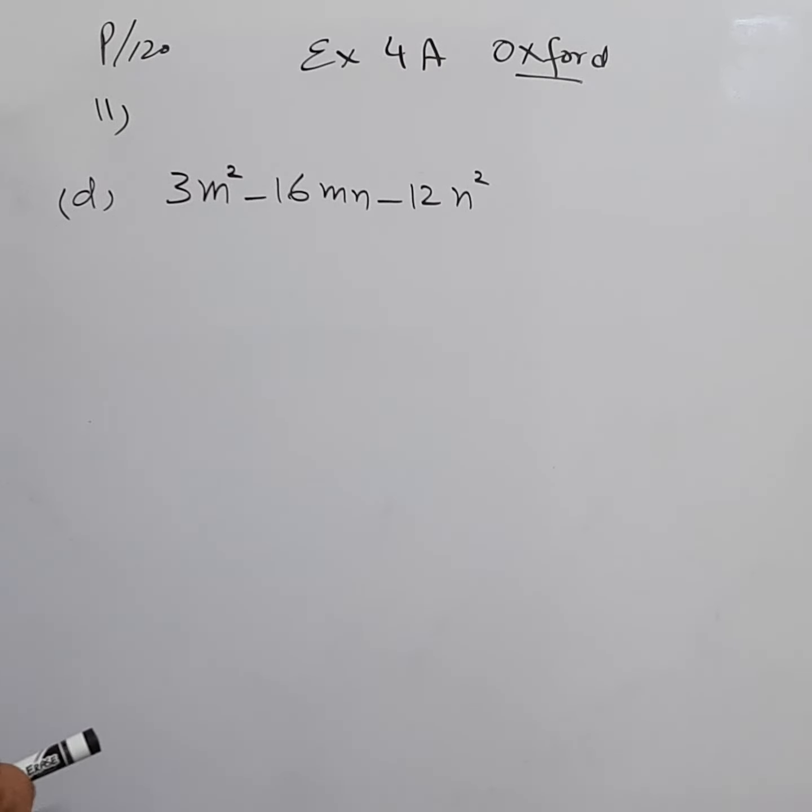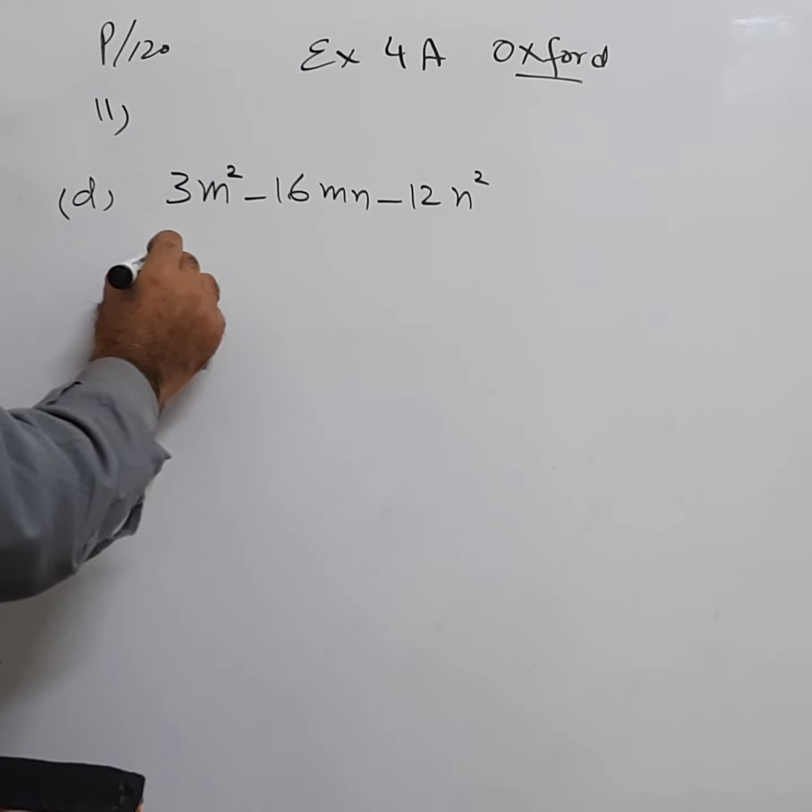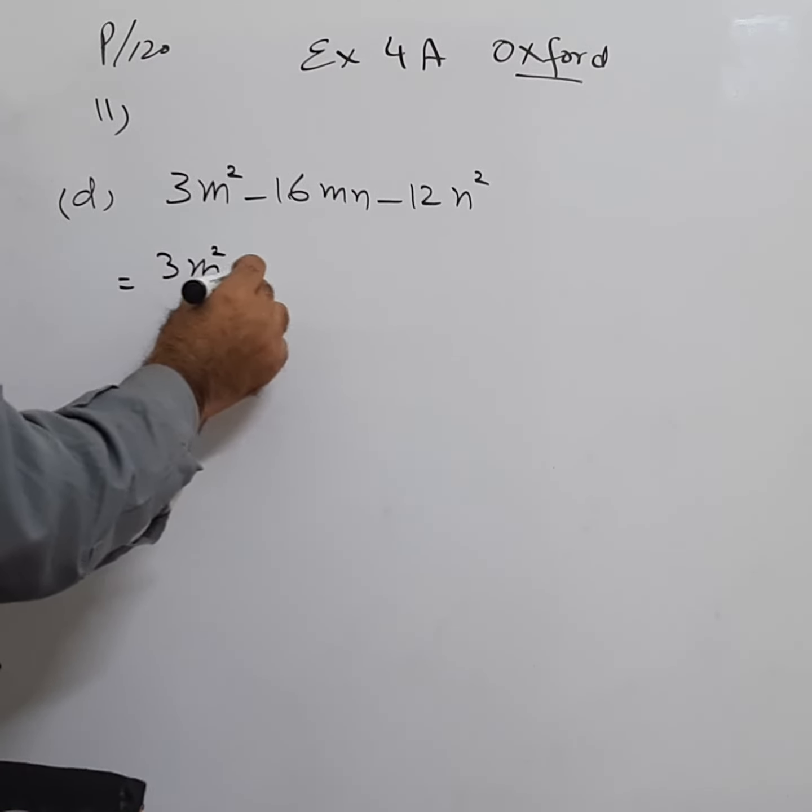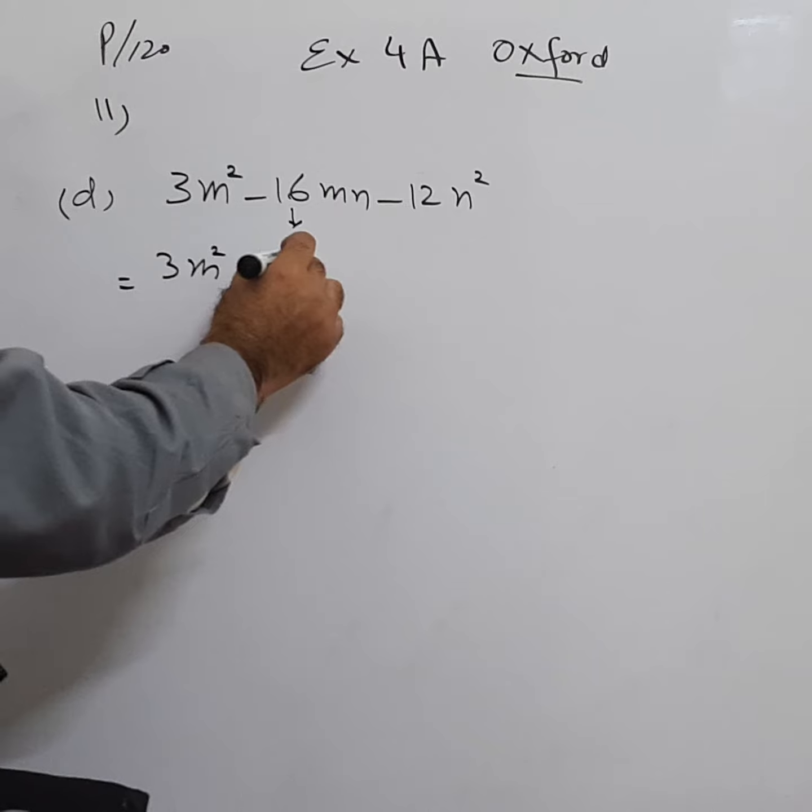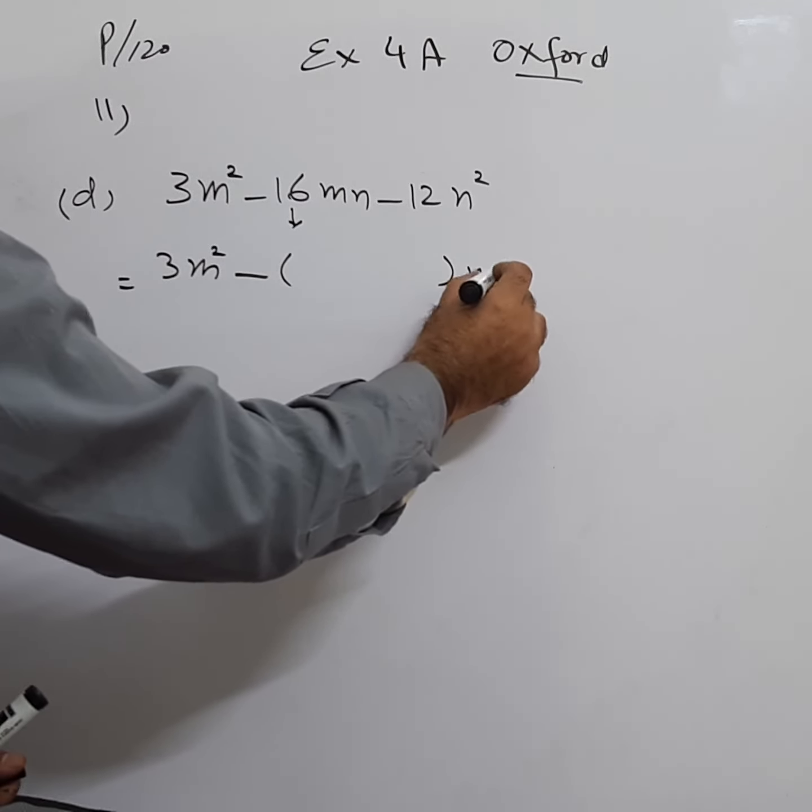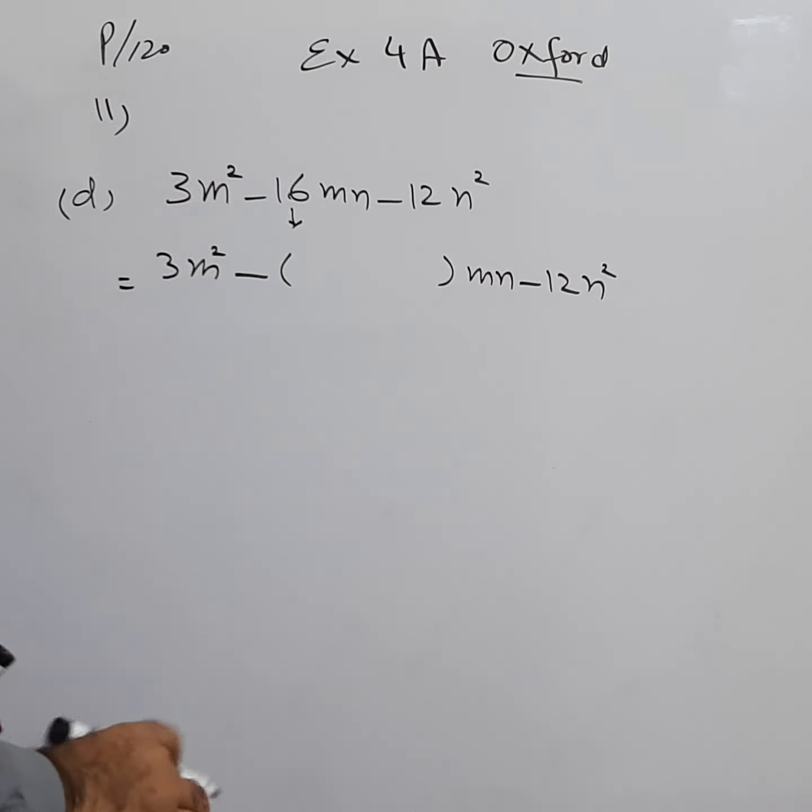Bismillahirrahmanirrahim. I will be doing question number 11, part D, page 120, Access 4A. This is factorize each of the following expressions completely. So we start: 3m squared minus... we need to reserve the place for the 16.